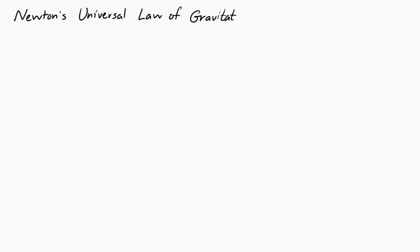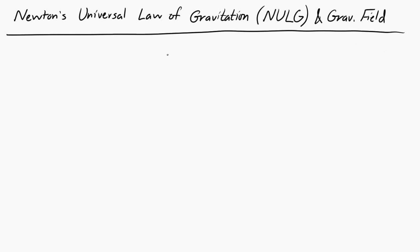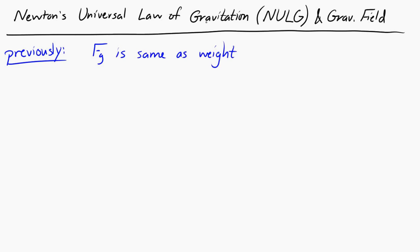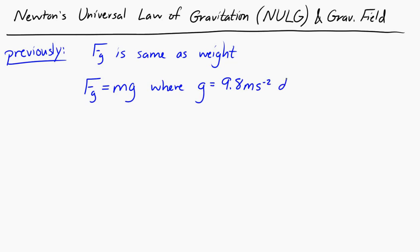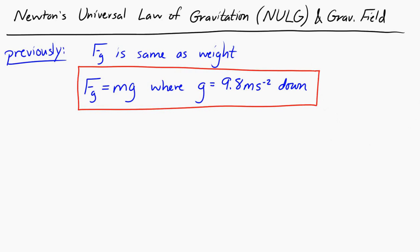Let's take a look at Newton's Universal Law of Gravitation and the gravitational field. Previously we've seen that gravitational force is the same as weight, and we have the equation Fg = mg, where g = 9.8 meters per second squared downward. But we were careful to say that's only on or near the surface of the Earth.